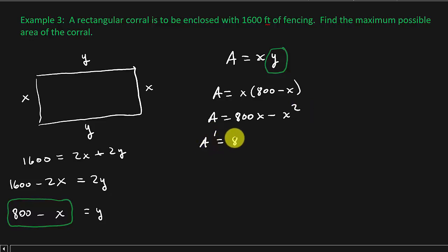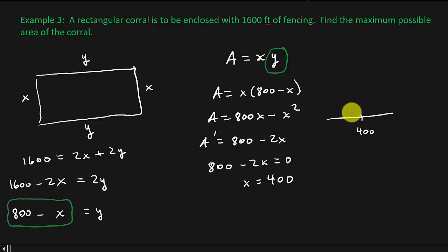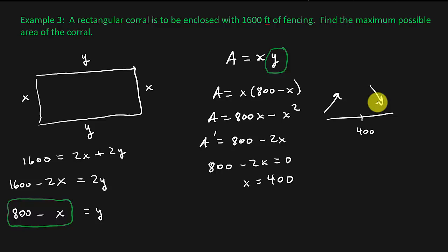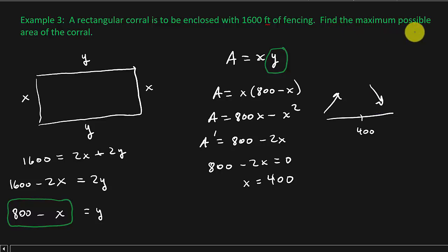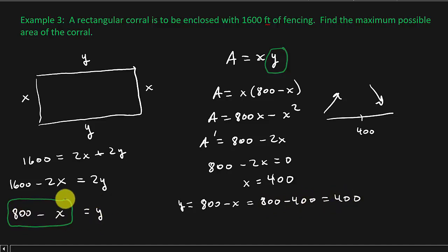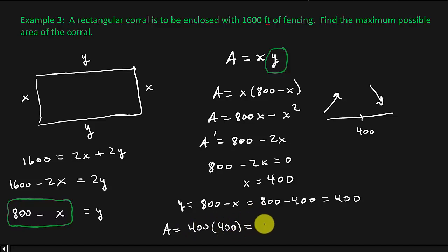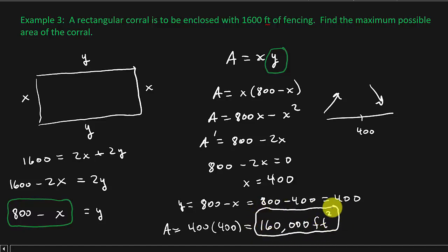Taking the derivative: 800 minus 2X. Setting 800 minus 2X equal to 0 gives X equals 400. Then Y equals 800 minus 400, which equals 400. So the maximum possible area is X times Y equals 400 times 400, which is 160,000 square feet. That's the maximum possible area for the corral.